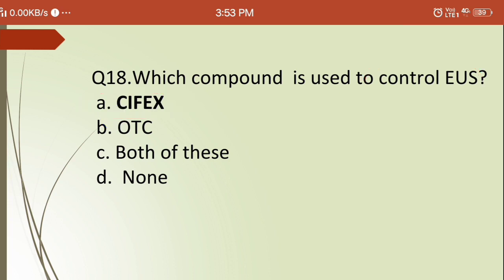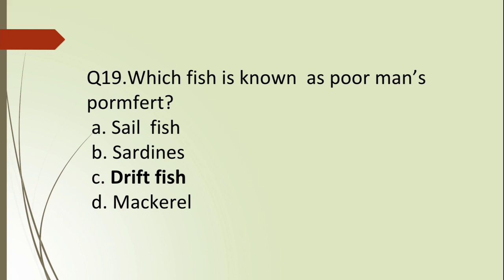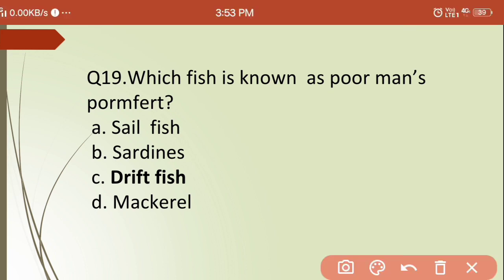Nineteenth question: which fish is known as poor man's pomfret? Options are: (a) sailfish, (b) sardine, (c) driftfish, (d) mackerel. The answer is driftfish — driftfish is known as the poor man's pomfret.